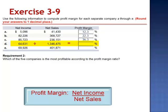Company D: net income 64,631 divided by net sales 1,346,475, gives a profit margin of 4.8%.